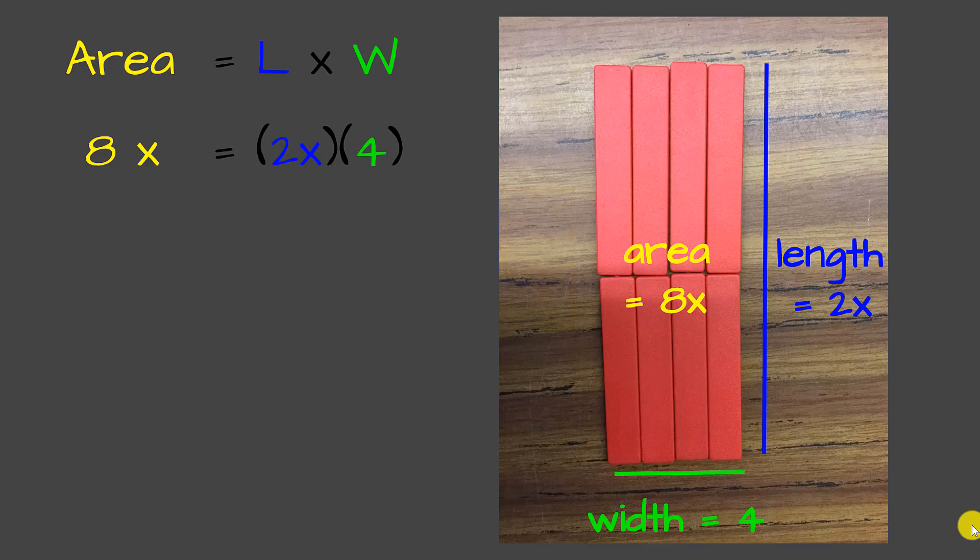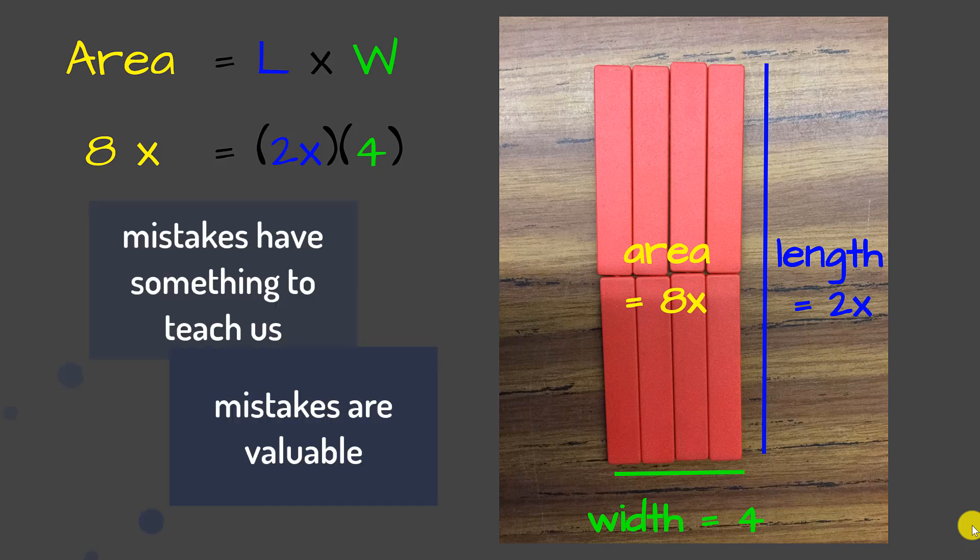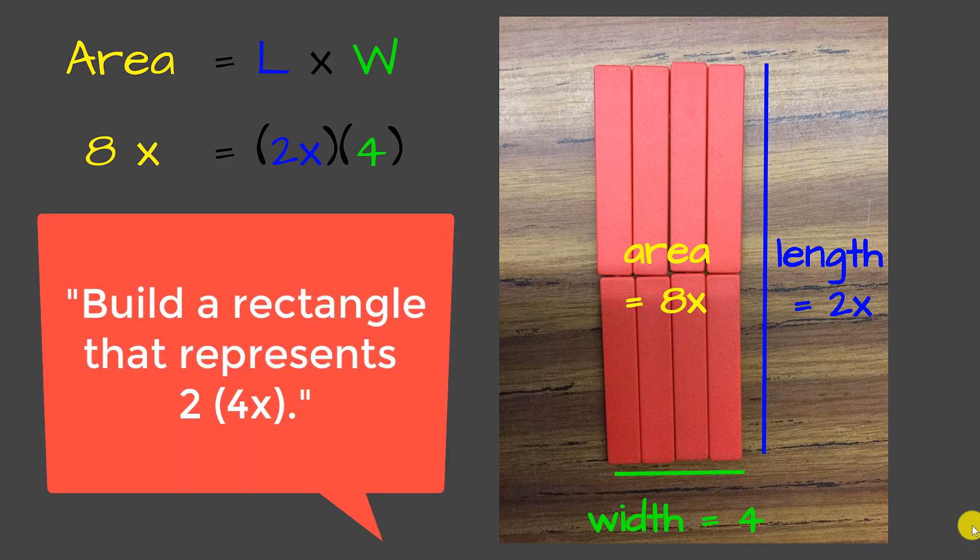And so by putting up a mistake, we're showing students that we believe that mistakes have things to teach us, that mistakes are valuable. And after looking at that together, we're going to ask students to build a rectangle that more closely represents the problem. And after some quiet think time, students will move their tiles.